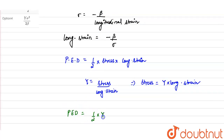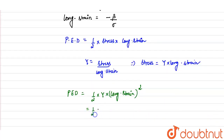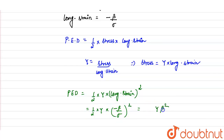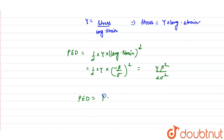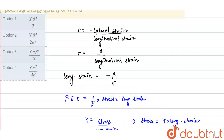Substituting, potential energy density equals half into Young's modulus into longitudinal strain squared. Longitudinal strain is minus beta upon sigma, so this equals half times Y times (beta/sigma) squared, which gives Y times beta squared upon 2 sigma squared. So the potential energy density finally comes out as Young's modulus times lateral strain squared, divided by 2 times Poisson's ratio squared.